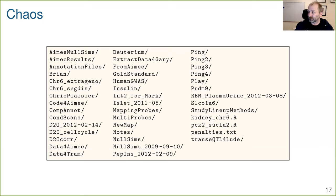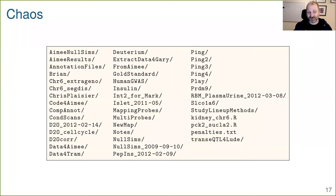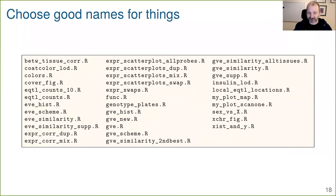This is a common difficulty — many side projects within a big project — but this is maybe not the way to organize them. Choosing good names for things is really central. As Jenny Bryan said, project organization and naming — choosing good names — really makes a big difference.